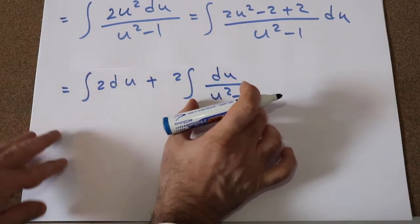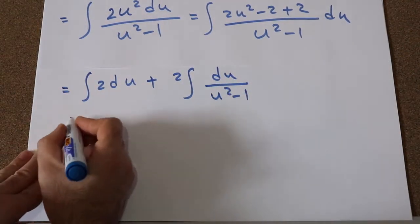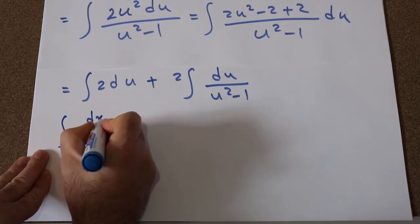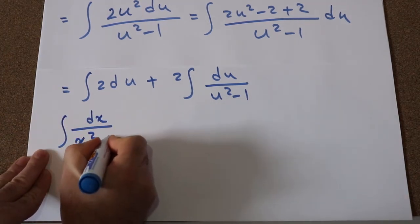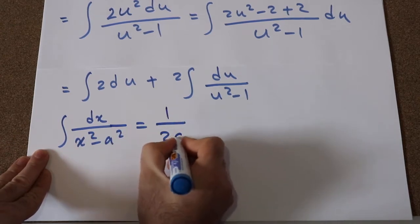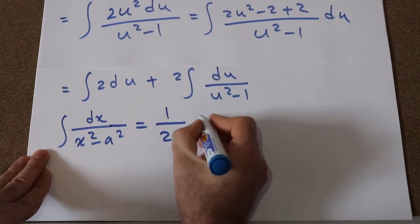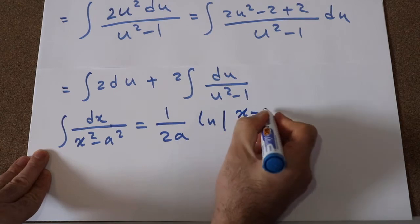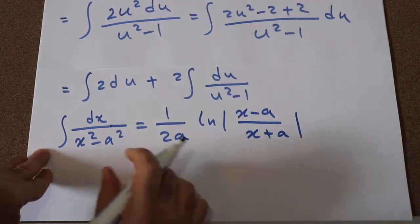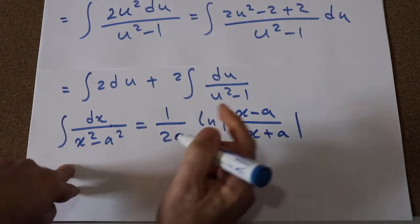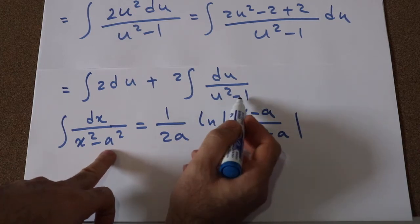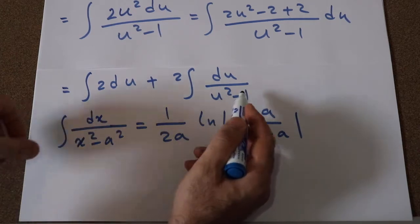To take this integral, we have a formula from the table of integrals: the integral of dx divided by x² minus a² is equal to 1 divided by 2a times ln|x minus a divided by x plus a|. Using this formula, you can simply calculate this integral. Here a is equal to 1.